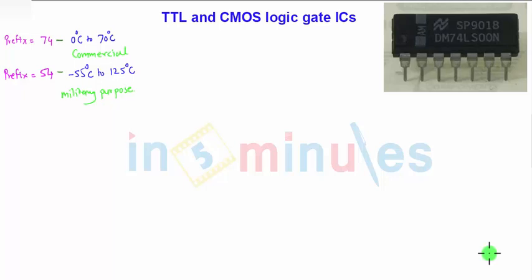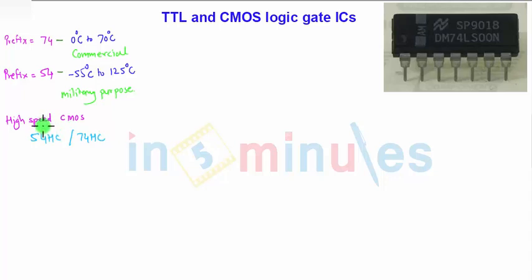These prefixes are common for both TTL and CMOS families. For CMOS, the most recent high-speed silicon gate CMOS series is designated with the prefixes 54HC or 74HC. These are high-speed silicon gate CMOS — a recent development, as previously metal gate CMOS was used.